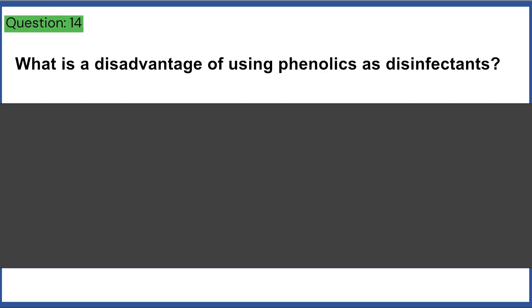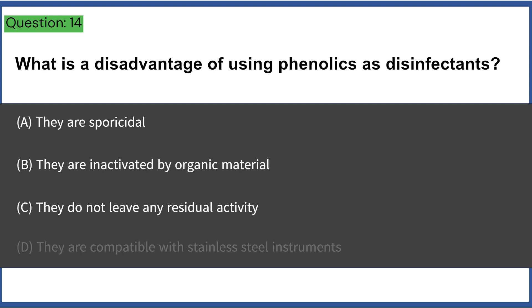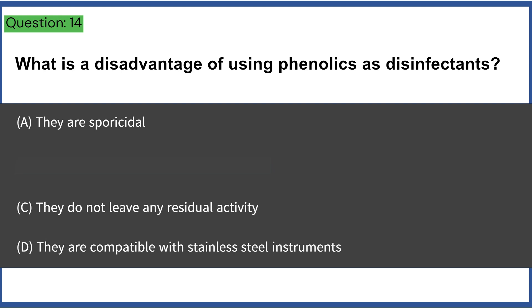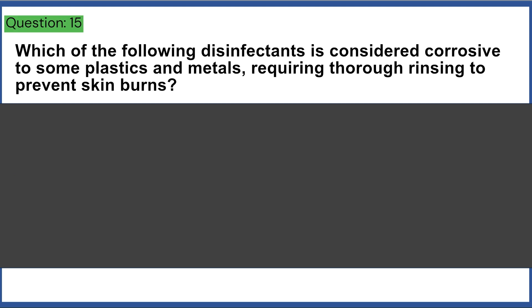What is a disadvantage of using phenolics as disinfectants? a) they are sporocidal, b) they are inactivated by organic material, c) they do not leave any residual activity, d) they are compatible with stainless steel instruments. Answer: B, they are inactivated by organic material.